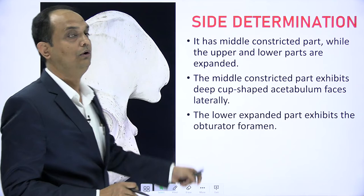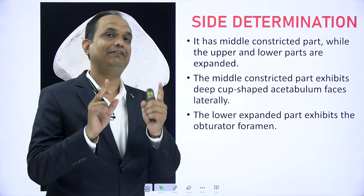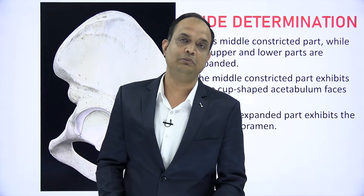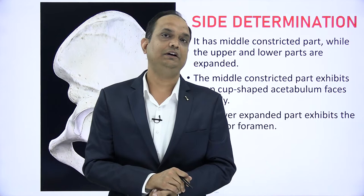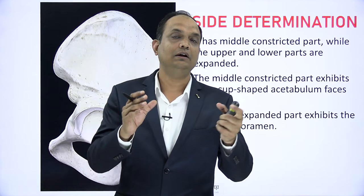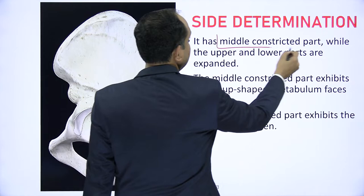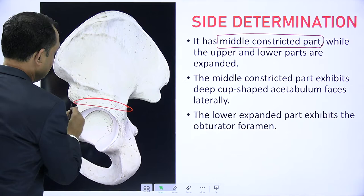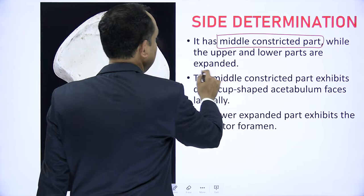Now, how to do the side determination? When you will hold the hip bone in your hand, you have to keep in mind that the hip bone is not present as an individual bone in the body — it is a part of the pelvis. Whenever you are doing side determination and anatomical positioning, you have to keep the pelvis in mind. The hip bone has a middle constricted part which is present just above the acetabulum.